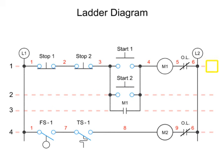This reference number doesn't have a line over it because the M1 contact in this circuit is normally open. However, if the contact was normally closed, it would have a line over the rung reference number.